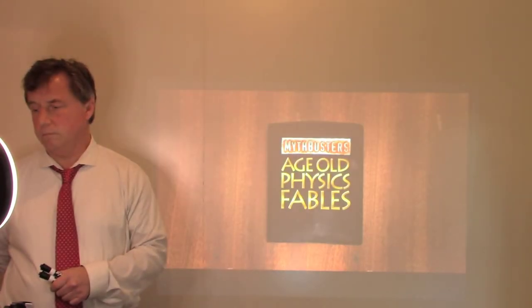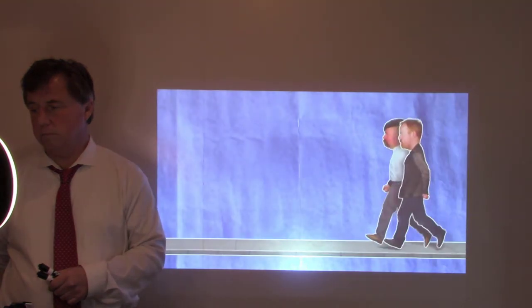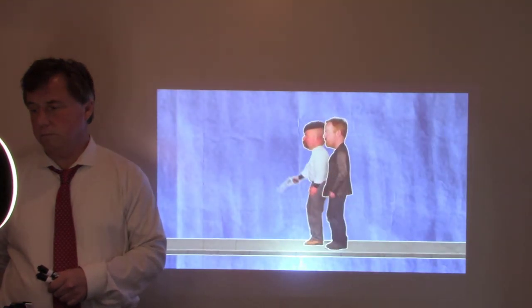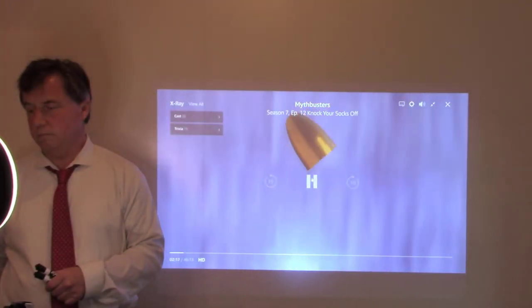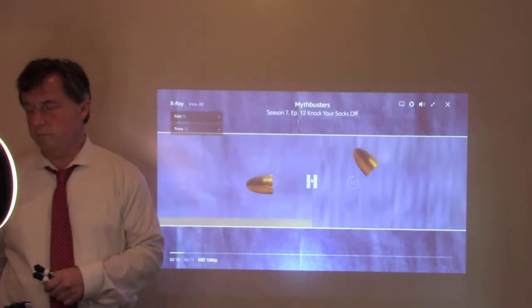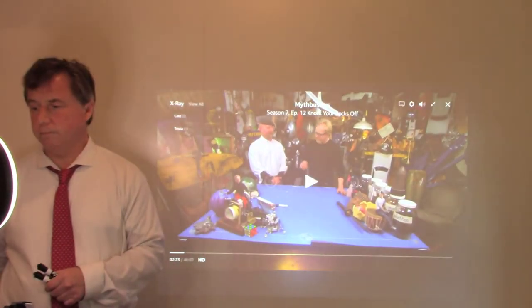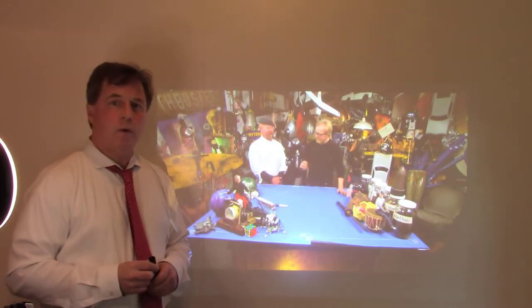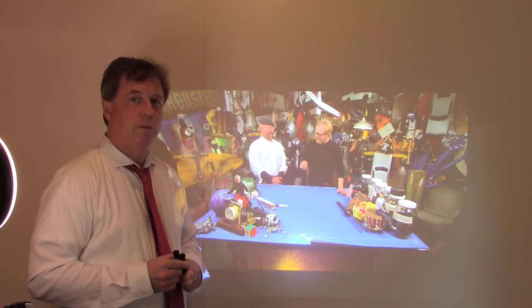It's an age-old physics fable that says a bullet dropped and a bullet fired simultaneously from the same height will hit the ground at the same time. But it's so darn difficult to test that no one's tried. Until now. So what's the plan? Okay, physics theory says that the bullet dropped and a bullet fired will hit the ground at the same time. Well, let's see about that.